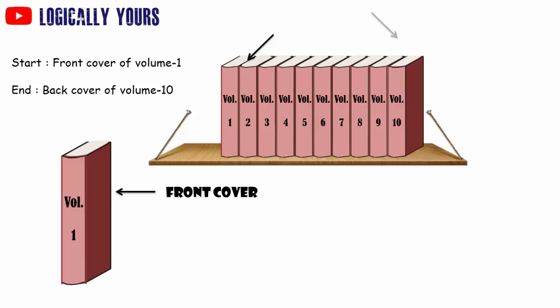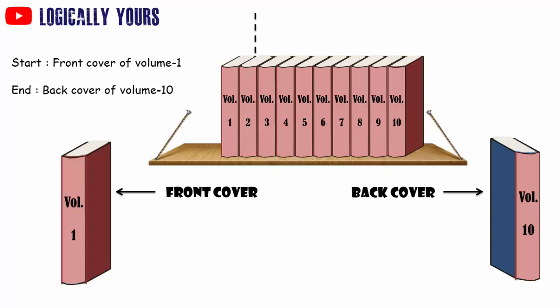And exactly the opposite way, the back cover of volume 10 is on the left side. The worm starts at the front cover of volume 1 and travels through 8 books. That makes a distance of 16 inches till it ends at the back cover of volume 10.